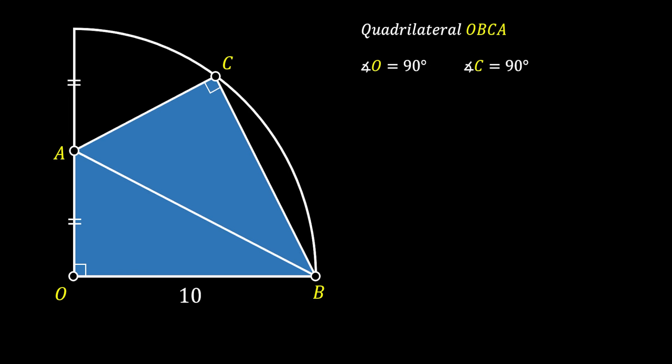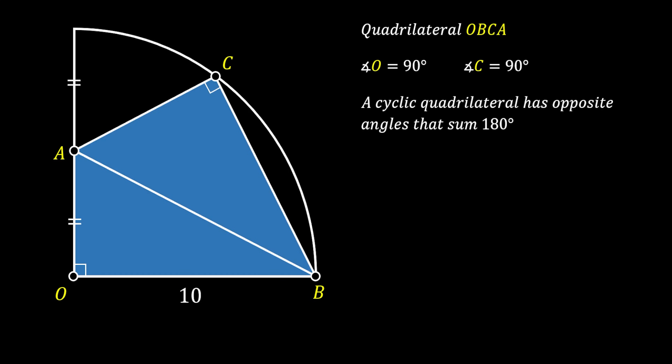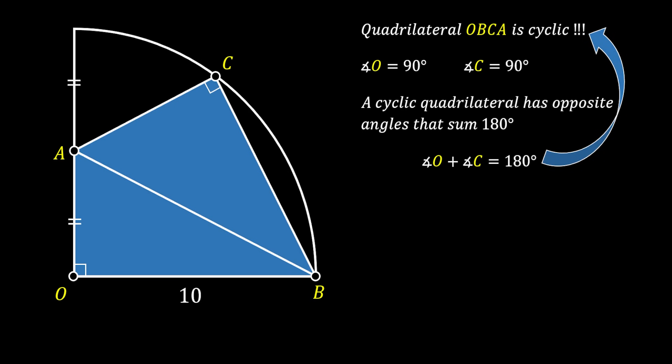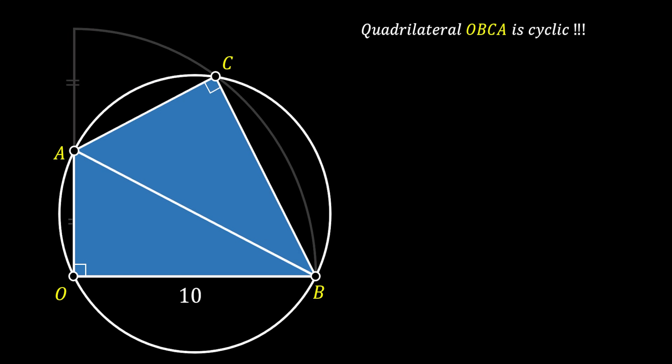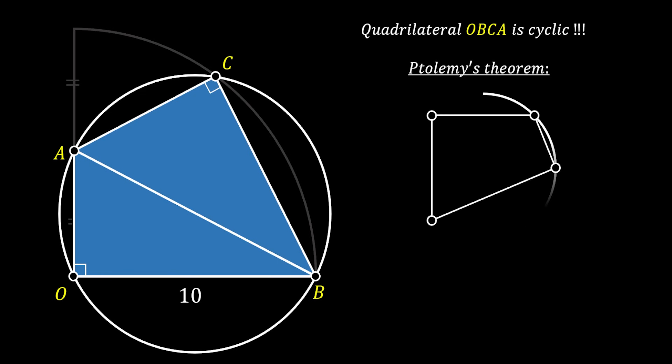Let's have a look at the quadrilateral OBCA. Two angles of this quadrilateral — the angle at point O and the angle at point C — are both 90-degree angles. Recalling that a cyclic quadrilateral has opposite angles that sum to 180 degrees: if we add the opposite angles O and C we get 180 degrees, which means our quadrilateral is indeed a cyclic quadrilateral, and we can circumscribe a circle around it.